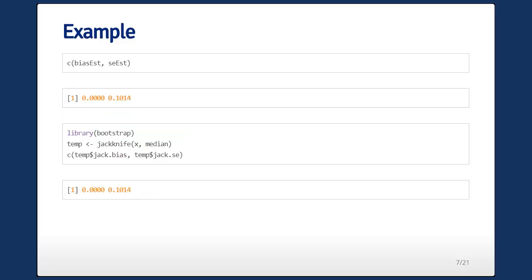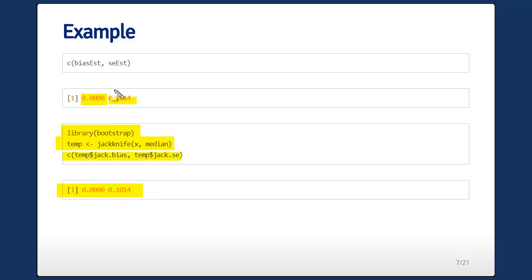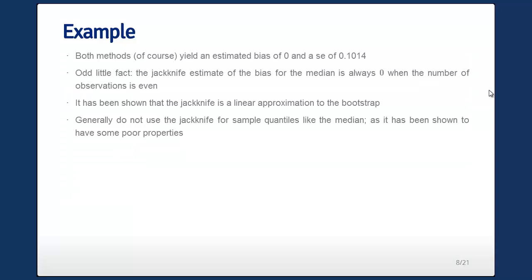Here's our bias estimate: zero. And here is our standard error estimate. We can also do this using the bootstrap package — just call jackknife with our data and the median function, assign it to a variable, and grab the bias and the standard error. Of course, those are the same as what we saw before. Both methods yield the same answers.